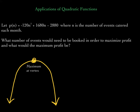The maximum is located at the vertex. For every point in the plane, the coordinates are n and P of n — your input variable and your function value, similar to x and f of x, or x comma y. So n stands for the number of events to be booked, and P of n stands for the profit. To find how many events need to be booked, find the first coordinate of the vertex; for maximum profit, find the second coordinate. We can use the vertex formula to find both values.